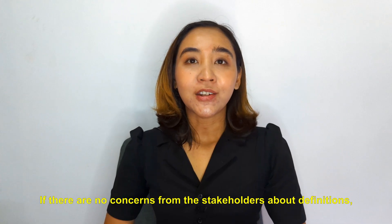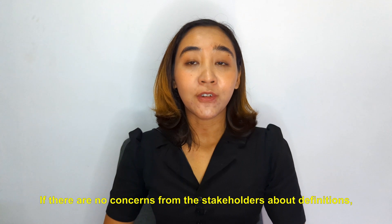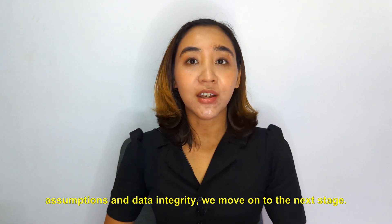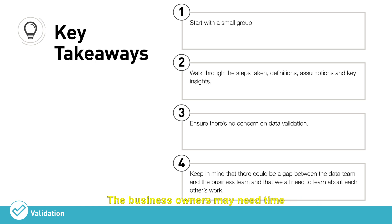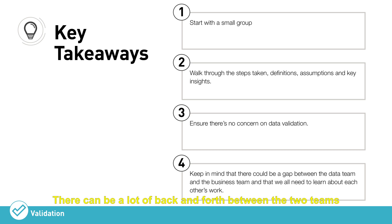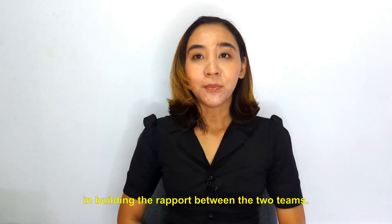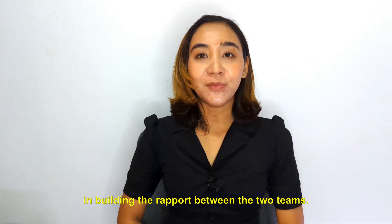If there are no concerns from stakeholders about definitions, assumptions, and data integrity, we move on to the next stage. When the two teams come together, there may be a gap in understanding of the context. The business owners may need time to absorb and interpret the analysis and visualization. There can be a lot of back and forth as data irregularities are discovered and corrected — it's all part of a healthy exercise in building rapport between the two teams.